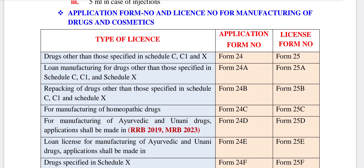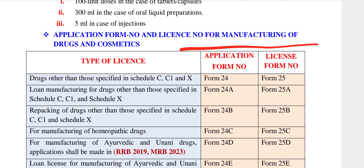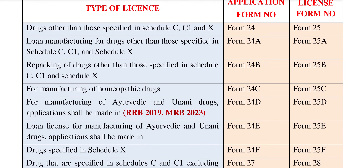Import is Form 8. Application farm number and license number for manufacturing of drugs and cosmetics — so we will see this. Manufacturing is Form 2. Application farm and license number — now we have to find the application farm number. There is also a farm number. If you have to find the government license number, there are also two. So you can focus on the application and license number.